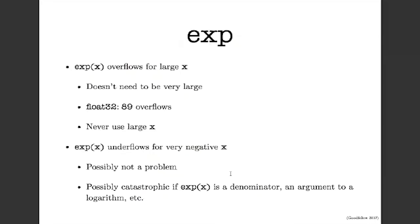One of the main culprits of numerical precision problems in deep learning is the exp function — e raised to the power x. This will overflow for large values of x. In float32, a value of 89 passed to exp will overflow to inf. To make sure your program doesn't have trouble with exp, never pass a large x to it, and design your functions so they will never compute exp of a large argument.